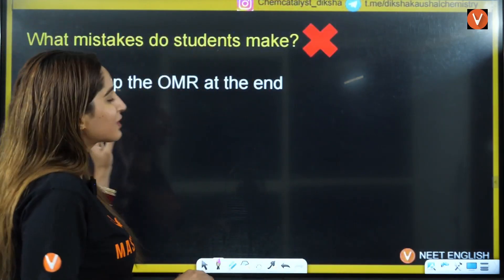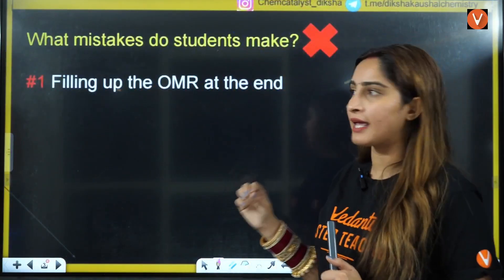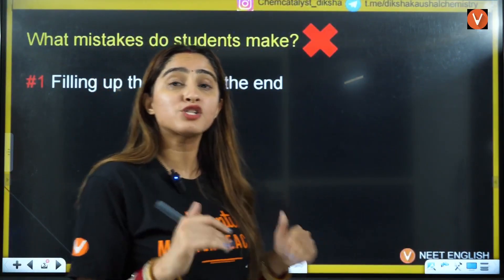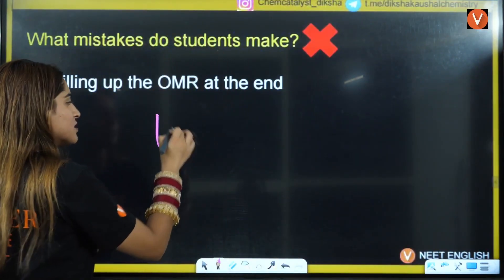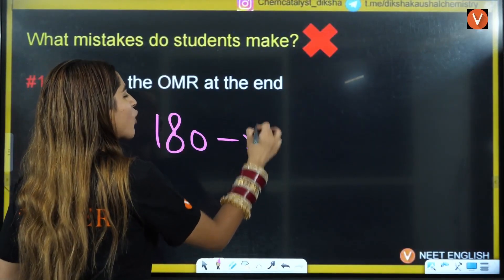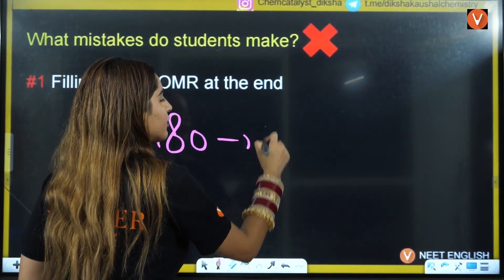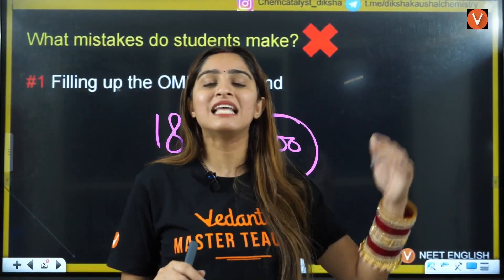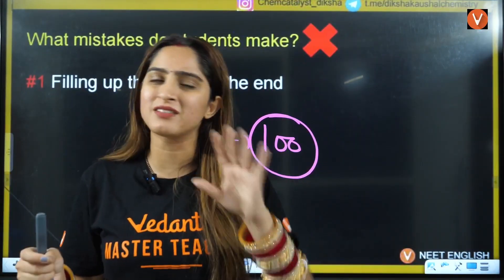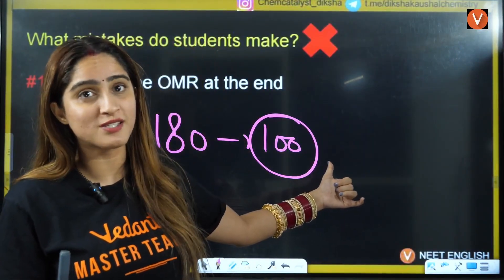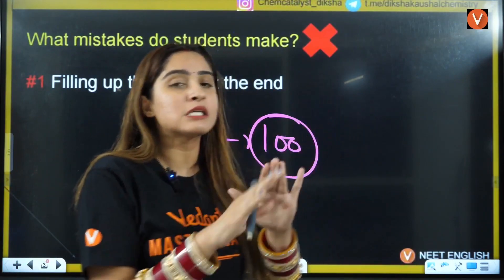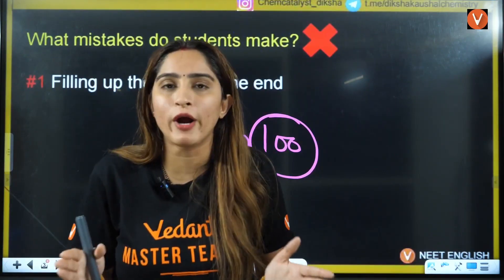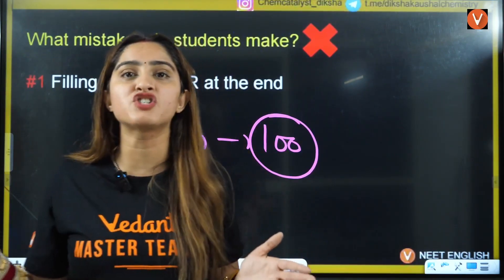The first common mistake is filling the OMR sheet at the very end. Some students solve all 150 or 100 questions first, then start filling the OMR. Very rare students can actually do this correctly — it's only possible if you are extremely fast and accurate, with near-zero chance of marking something wrong.